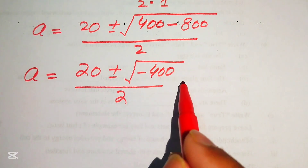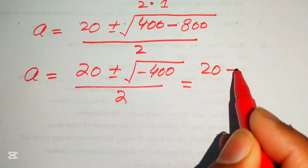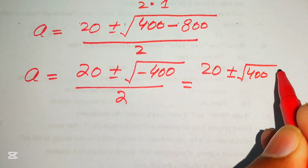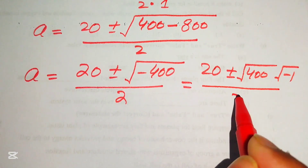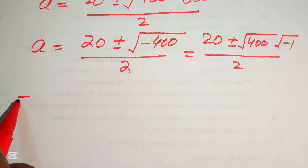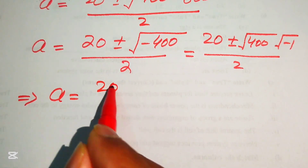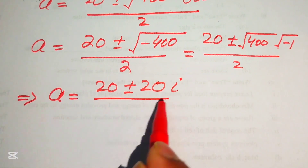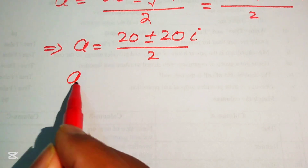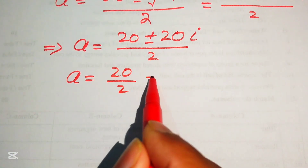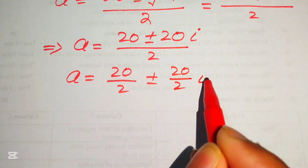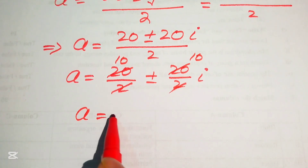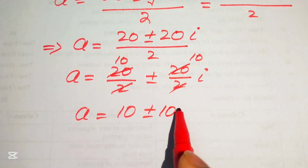We break the square root: square root of minus 400 equals square root of 400 times square root of minus 1. Since square root of 400 equals 20 and square root of minus 1 equals i (iota), we get a equals (20 plus or minus 20i) divided by 2, which simplifies to a equals 10 plus or minus 10i.